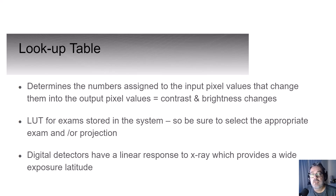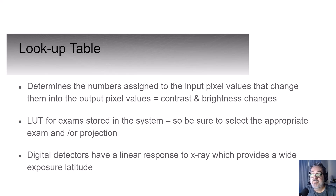The lookup table determines the numbers assigned to the input pixel values that change them into the output pixel values — it changes the brightness and contrast to look optimum. Selecting the wrong body part or projection, as we saw last time, will affect the outcome based on the assigned lookup table. If you process a lumbar spine under an AP abdomen, the image is going to look washed out and have lower contrast than desired.